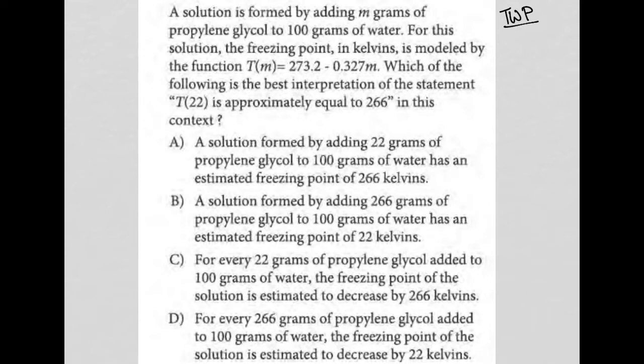So the question says, a solution is formed by adding M grams of propylene glycol. So I'll say M, and then the G here is for grams, and I'll just say PG for propylene glycol. To 100 grams of water. So we're adding it, so I'm going to just put a plus 100 grams H2O for water.